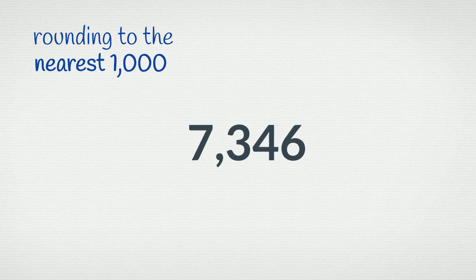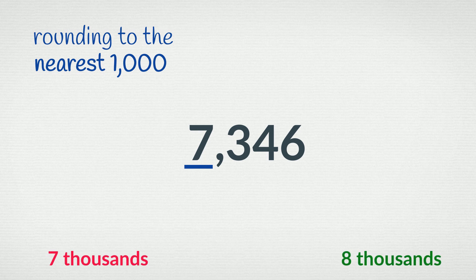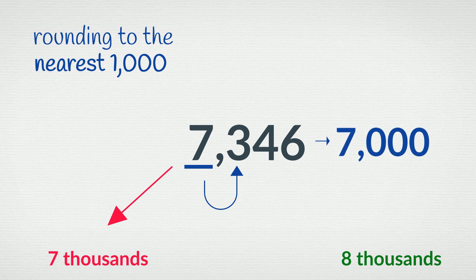Now let's look at rounding to the nearest thousand, starting with 7,346. To round to the nearest thousand, we start by identifying the thousands place. 7,346 is between 7 thousands and 8 thousands. To round it to the nearest thousand, we must decide whether it's nearer 7 thousands or 8 thousands. Again, the digit in the place value to the right — the hundreds in this case — will guide us. The 3 tells us we need to round down. This number rounds down to 7,000.